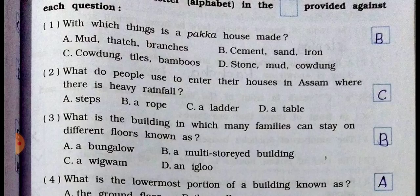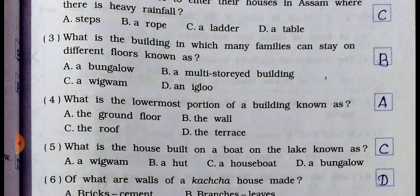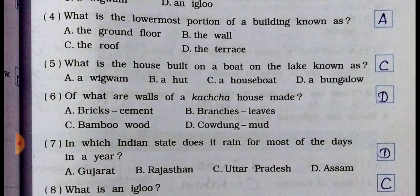See the third question: what is the building in which many families can stay on different floors known as? Option A: a bungalow. Option B: a multi-storied building. Option C: a wigwam. Option D: an igloo. B is the right answer — a multi-storied building. Write B for question three.